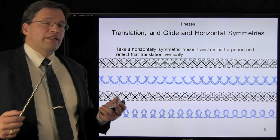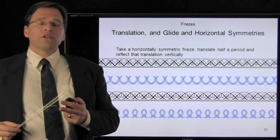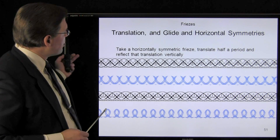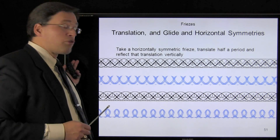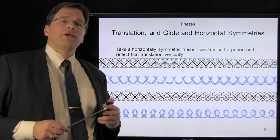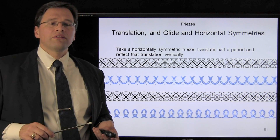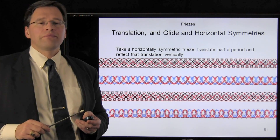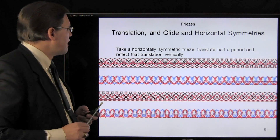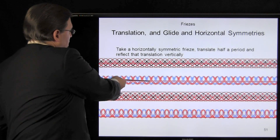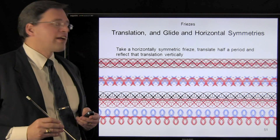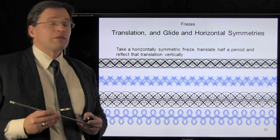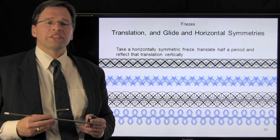If we want translational, glide, and horizontal symmetries as well as rotational symmetries, we start with a pattern that has horizontal symmetry, shift it over half a period, then in each case choose a line of vertical reflection, reflect the pattern, and we get some very nice looking friezes.